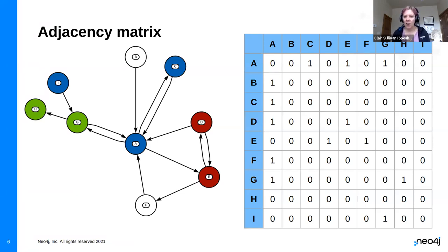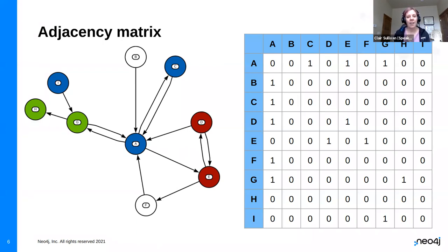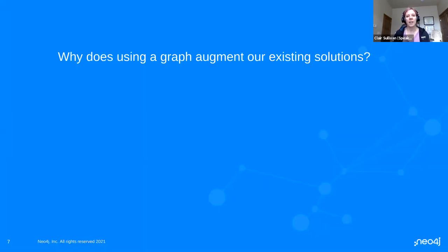H does not have any values of one within it because this is a directed graph — H does not have an arrow going out into another node. We can talk about degree: that's just the number of arrows coming in and out of a node. We can further simplify that to in-degree and out-degree. In-degree is how many arrows are coming in; out-degree is how many are going out.